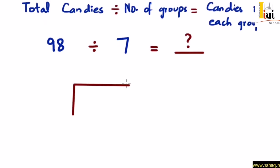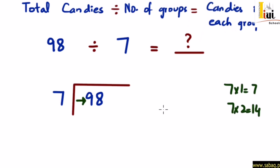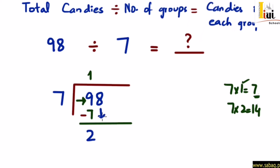तो division का निशान इस्तमाल करेंगे — अंदर रखेंगे 98 और बाहर रखेंगे 7, क्योंकि 98 dividend है और 7 divisor है। Dividend के left side से देखें तो पहला number है 9। 8 को ignore करें और 9 को 7 से divide करें: 7×1=7, 7×2=14। तो 9, 7 और 14 के दर्मियान में आ रहा है। 9 से छोटे वाले number का digit उठाना है यानि 7×1=7। 14 नहीं रख सकते क्योंकि minus नहीं होगा। तो 9 minus 7 = 2। अगले digit 8 को नीचे लेकर आएंगे, तो 2 के साथ मिलके 28 बन जाएगा।